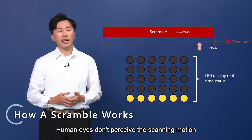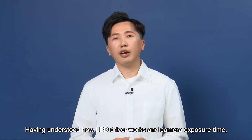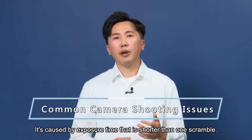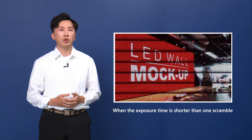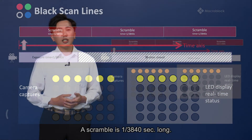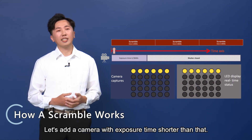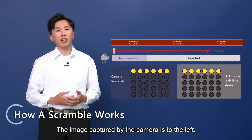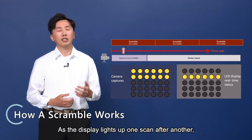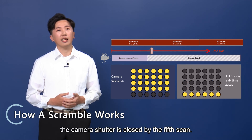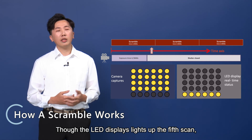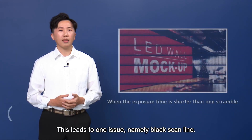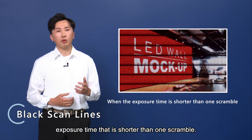Human eyes don't perceive the scanning motion due to persistence of vision. Having understood how LED driver works and camera exposure time, let's look at the black scanline issue. It's caused by exposure time that's shorter than one scramble. A scramble is 1/3840th second long. As the display lights up one scan after another, the camera shutter closes before the 5th scan — so the camera doesn't capture it. This leads to the black scanline issue.